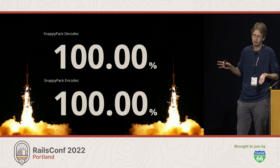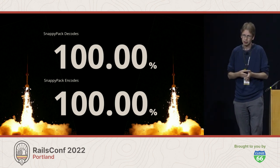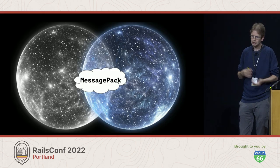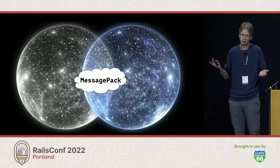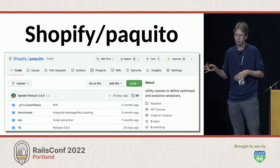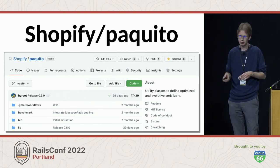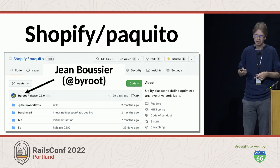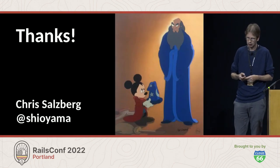We got to 100% — I think six to eight months ago — and we entirely removed Marshal from the cache. Now anything can go through MessagePack, and it really frees developers. Developers don't have to worry that their big refactor is going to suddenly blow up on cache. Most of what I talked about has been extracted into a gem called Paquito. Big thanks to Jean Boussier, who did a lot of work on the extraction and also on the work leading up to that. Thanks everybody.